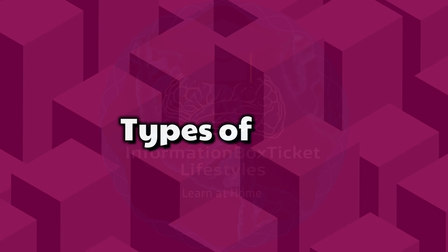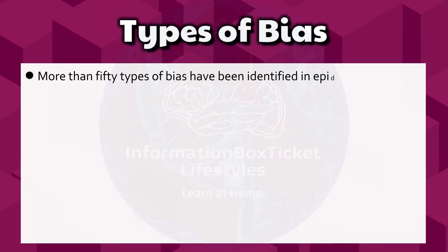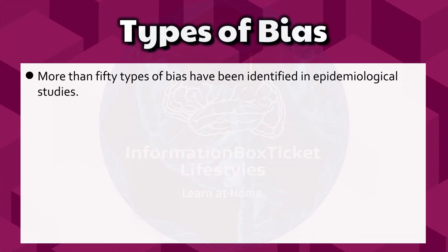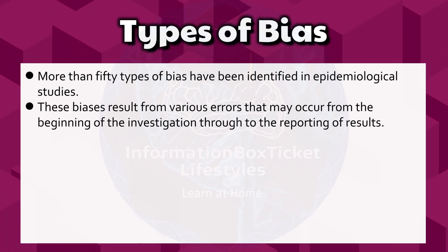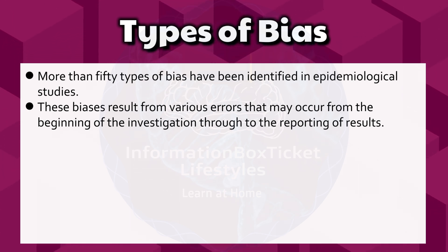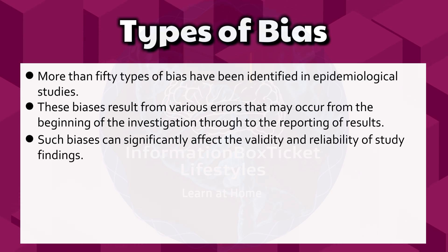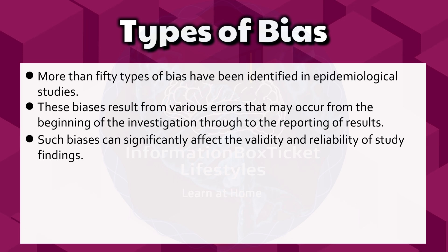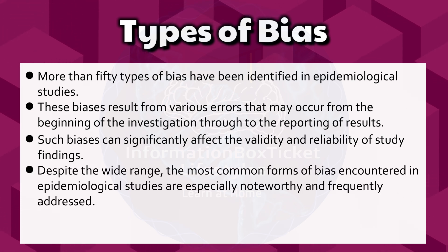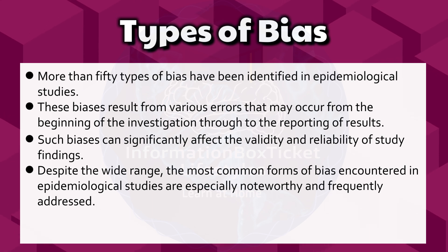Types of bias: More than 50 types of bias have been identified in epidemiological studies. These biases result from various errors that may occur from the beginning of the investigation through to the reporting of results, and can significantly affect the validity and reliability of study findings. Despite the wide range, the most common forms of bias encountered in epidemiological studies are especially noteworthy and frequently addressed.